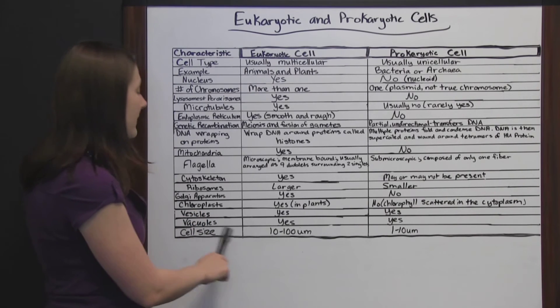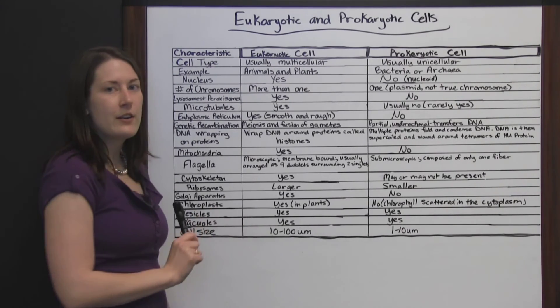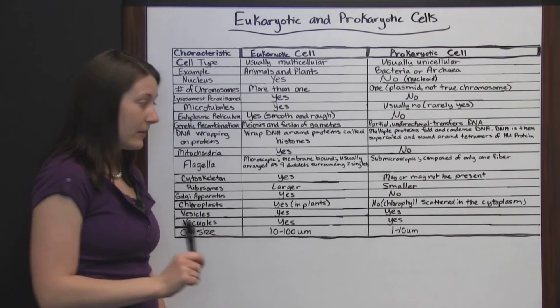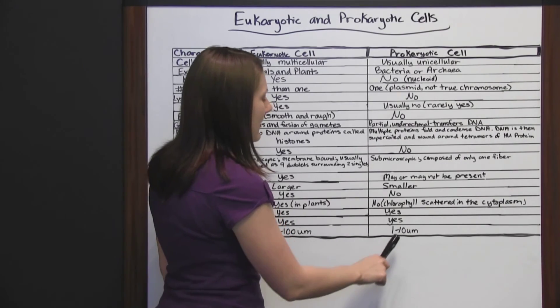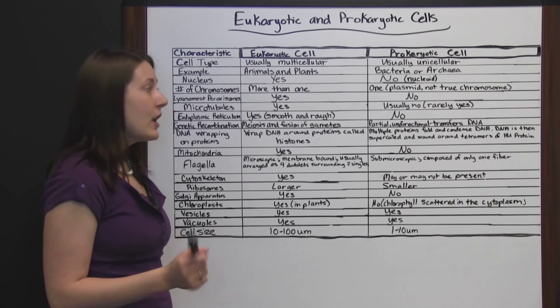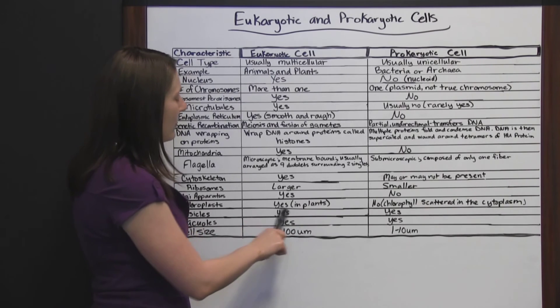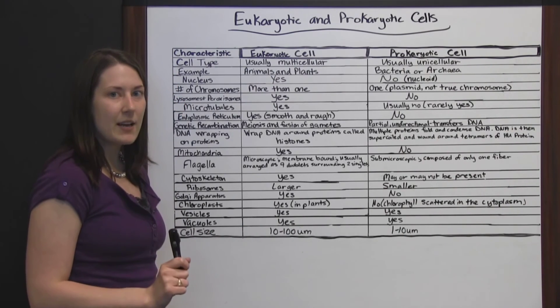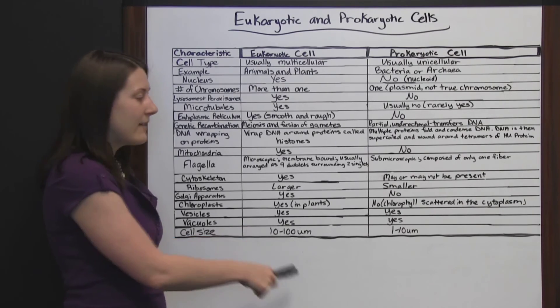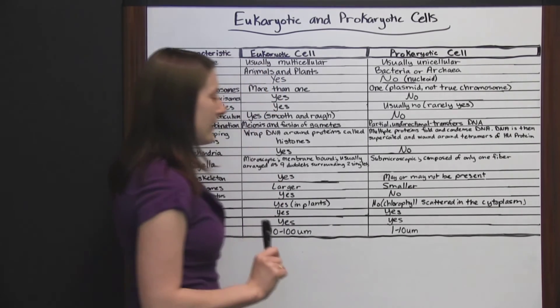Then cell size is going to be 10 to 100 micrometers, which is really small. Prokaryotic cell is going to be 1 to 10 micrometers. You can see that the cell size on eukaryotic cells are going to be about 10 times larger on average than these tiny prokaryotic cells.